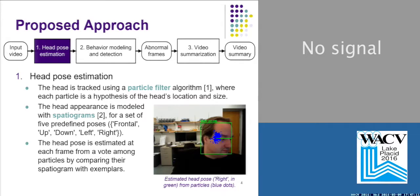The head appearance is modeled with spatiograms for a set of five poses: frontal, up, down, left, and right. The head pose is estimated at each frame from a vote among particles by comparing their spatiogram with exemplars.